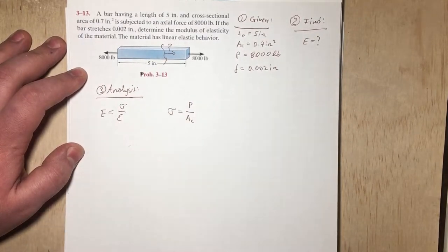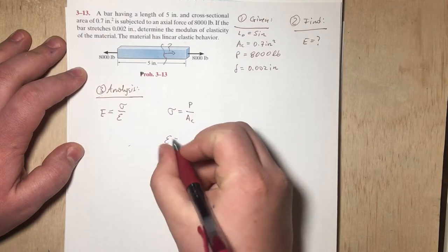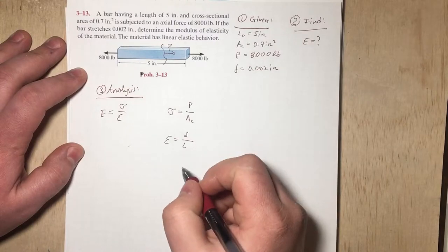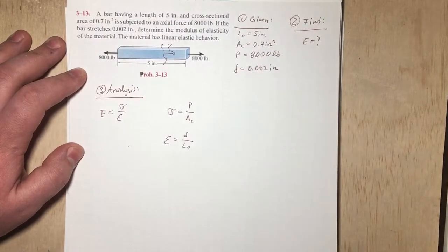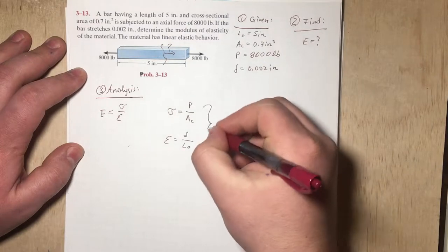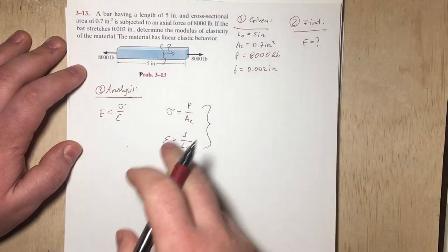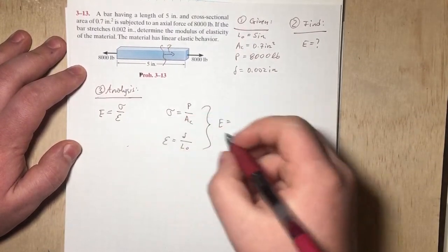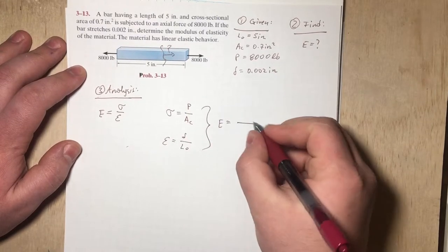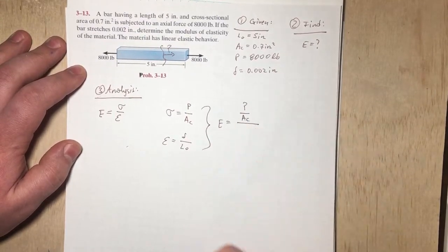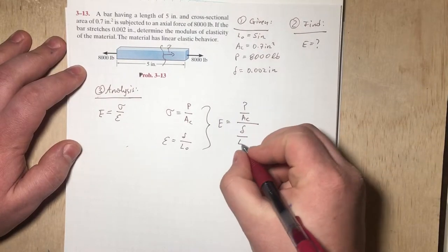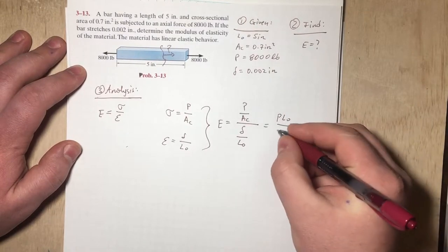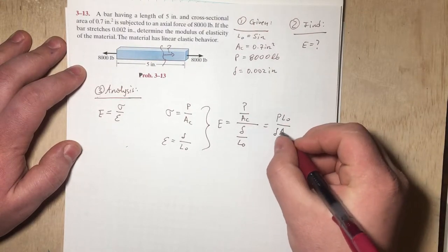And then let's look at our strain, which by definition is delta over L0. Delta is our stretch, and L0 is our length that is given. So then we can use what we just came up with to solve for E, because we know E is going to be sigma over epsilon, which means we have P over cross-sectional area over delta over L0, which simplifies to P times L0 over delta times cross-sectional area.